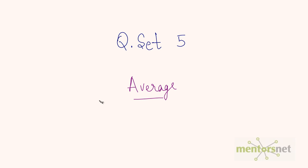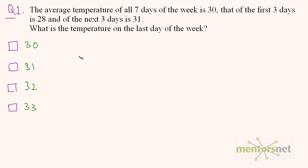Hi guys, let us solve question set number 5 on average. Question 1: The average temperature of all 7 days of the week is 30. That of the first 3 days is 28 and of the next 3 days is 31. So what is the temperature on the last day of the week?